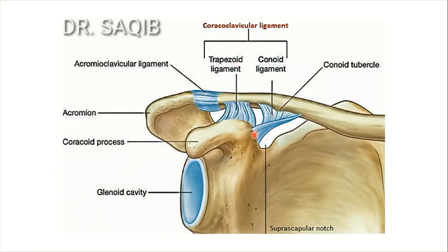From the root of the coracoid process, the conoid ligament runs to the conoid tubercle. These two separate ligaments — the trapezoid ligament and the conoid ligament — together form the coracoclavicular ligament.